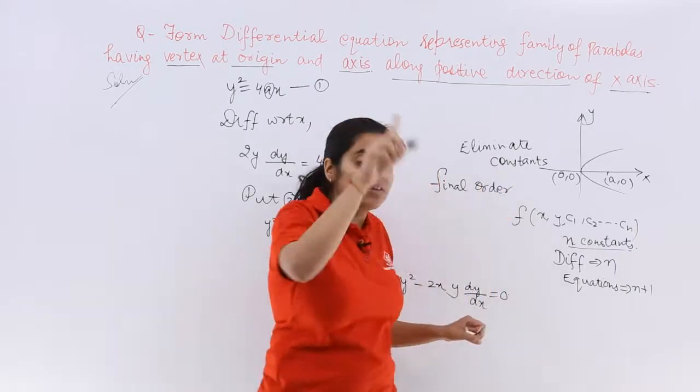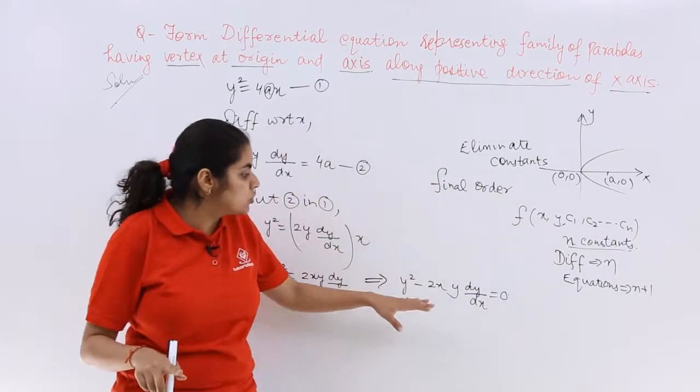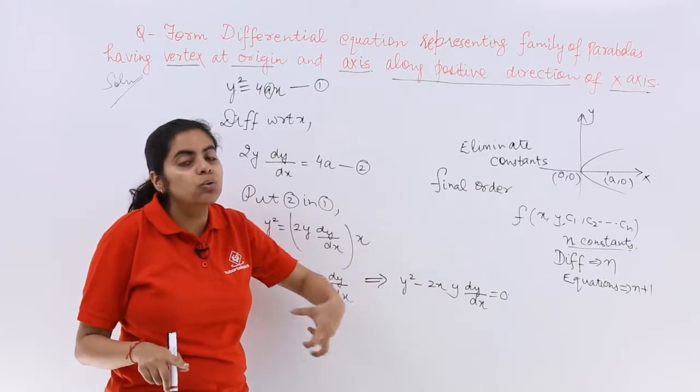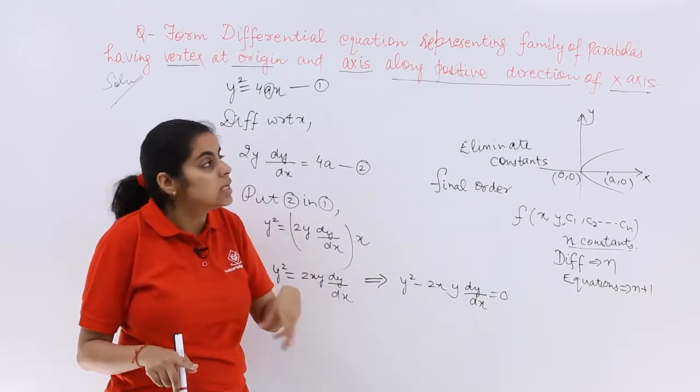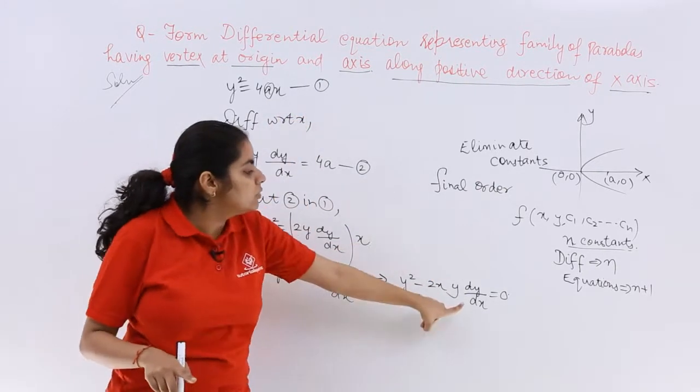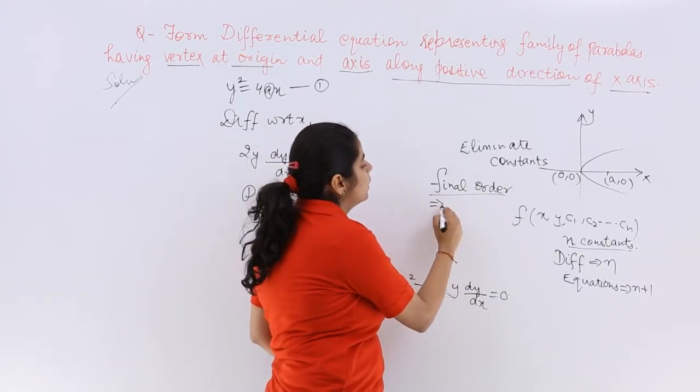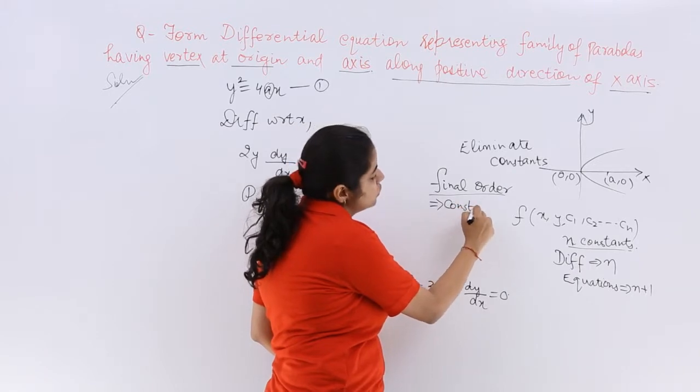or the final resultant differential equation will be the same with respect to the constants. Since there was only one constant, we have only first order differential equation. So final order is also dependent upon the number of constants.